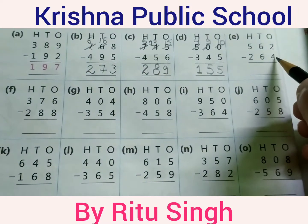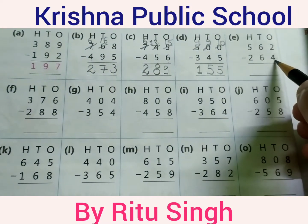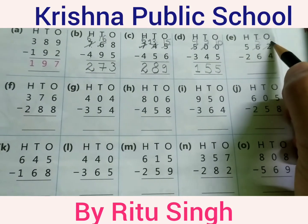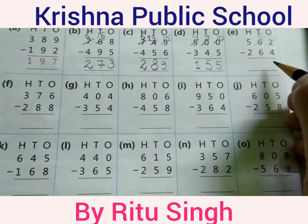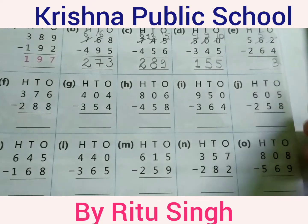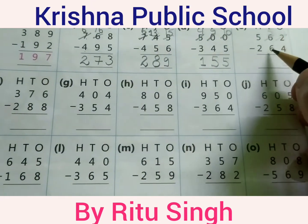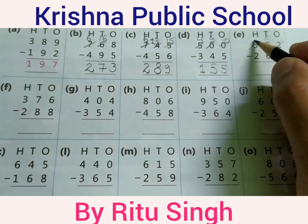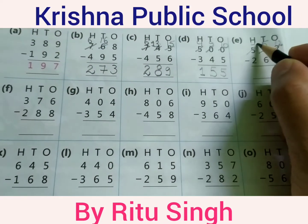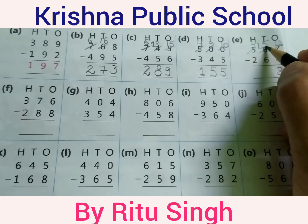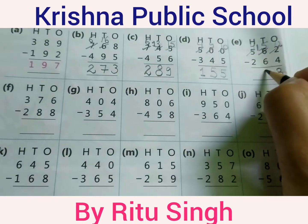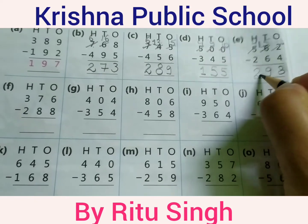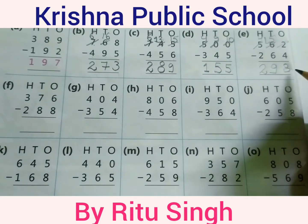2 minus 4 — 2 is a smaller digit compared to 4. Borrow from 6, making it 12. 12 minus 4 equals 8. 5 minus 6 — 5 is a smaller digit compared to 6. Borrow from the hundreds position, making it 15. 15 minus 6 equals 9. 4 minus 2 equals 2. Your answer is 298.